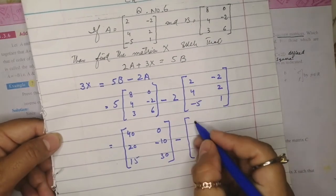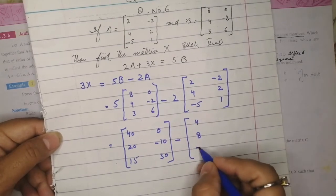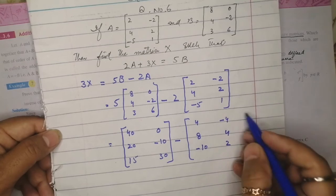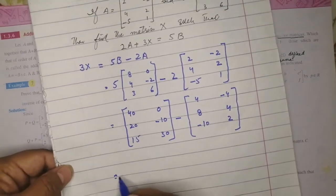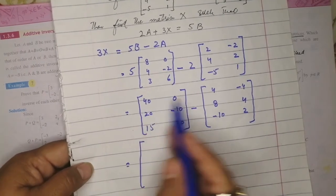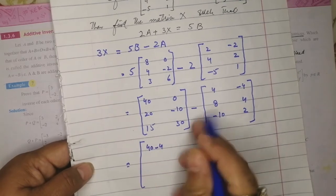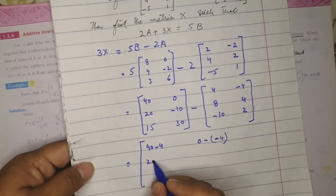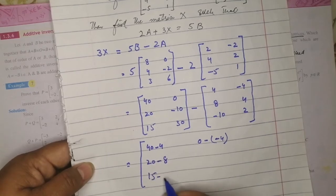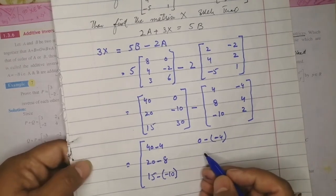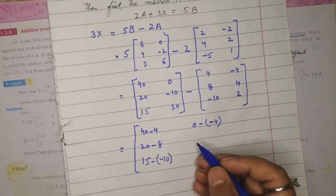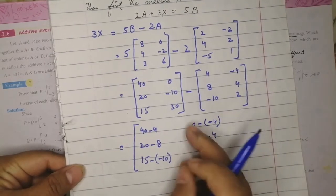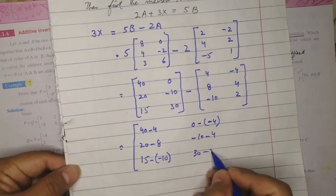Now multiply matrix A elements by 2: 2×2=4, 2×4=8, 2×(-5)=-10, 2×(-2)=-4, 2×2=4, 2×1=2. Since there is a minus sign in the middle, we subtract corresponding elements: 40 minus 4, 0 minus (-4) in brackets, 20 minus 8, 15 minus (-10) in brackets, -10 minus 4, 30 minus 2.